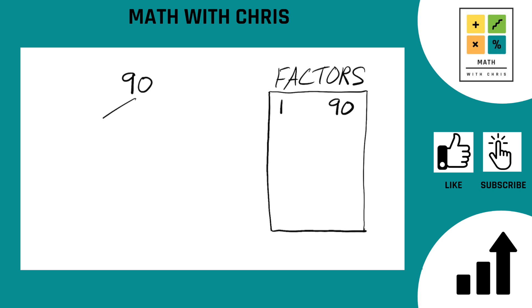What two numbers can multiply together to give us 90? We can pick any combination we can think of. I'm going to go with the most obvious, is 9 times 10. 9 times 10 is 90.